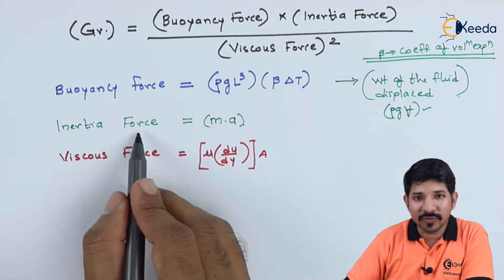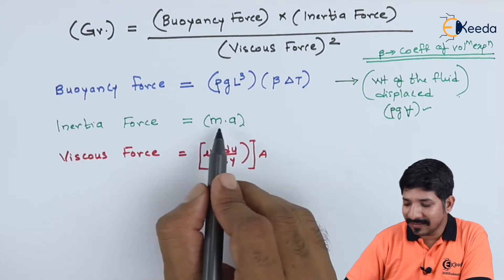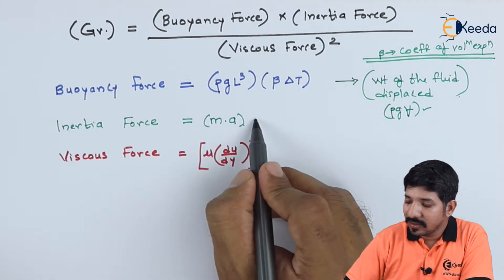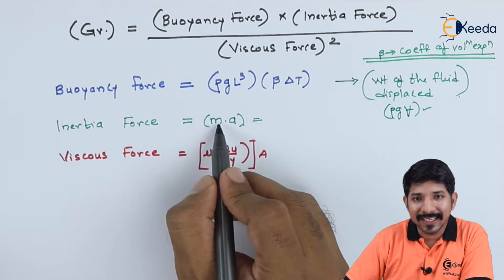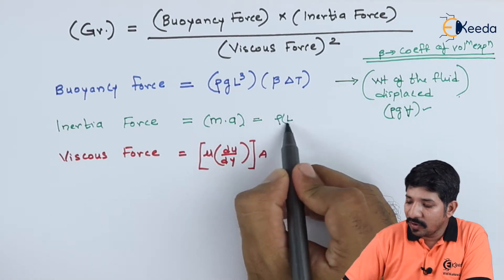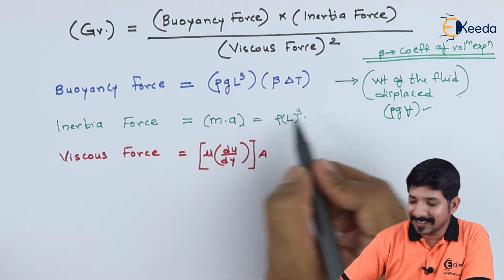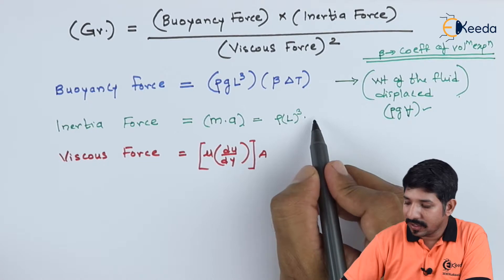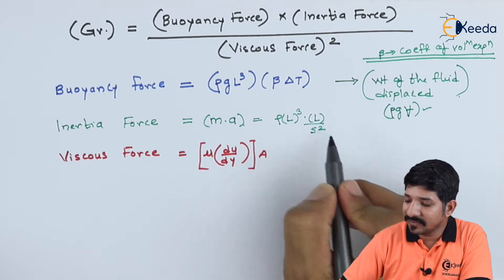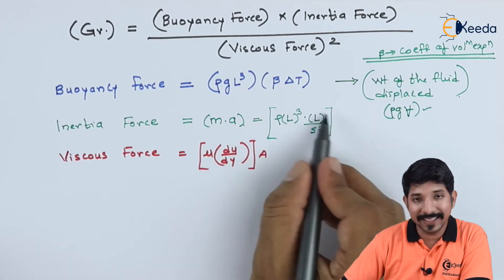Now, let us look at the inertial force. We know the inertial force is nothing but by Newton's second law principle, it is summation F is equal to mass into acceleration. So, let me write this as mass into acceleration itself. So, my mass I can describe as density into volume. Let me write instead of volume L cube into my acceleration is nothing but meter per second square. So, instead of meter, let me write again L per second square. So, finally, I am getting the term something like this.